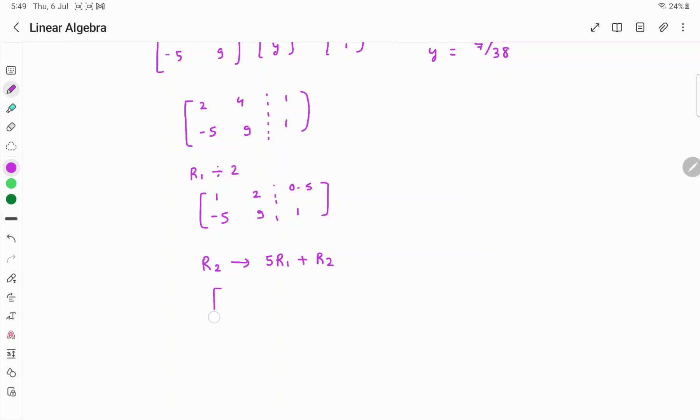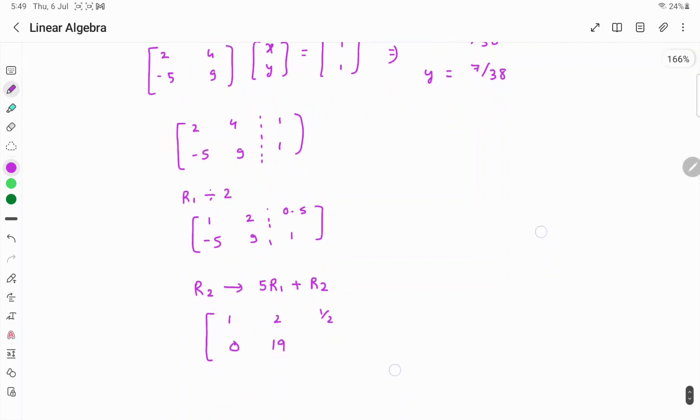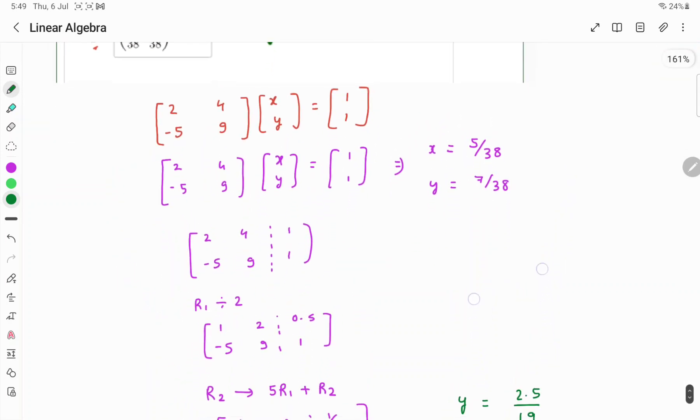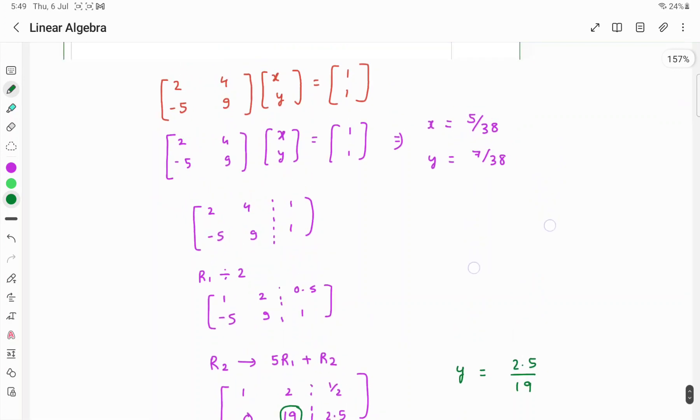Now if you add to R2 five times R1, what will you get? This is the same, 1 by 2 only. Here plus 5 times 0.5 is 2.5. So from here we can say that 19Y is equal to 2.5, so Y equals 2.5 by 19. Let me check if it is right.